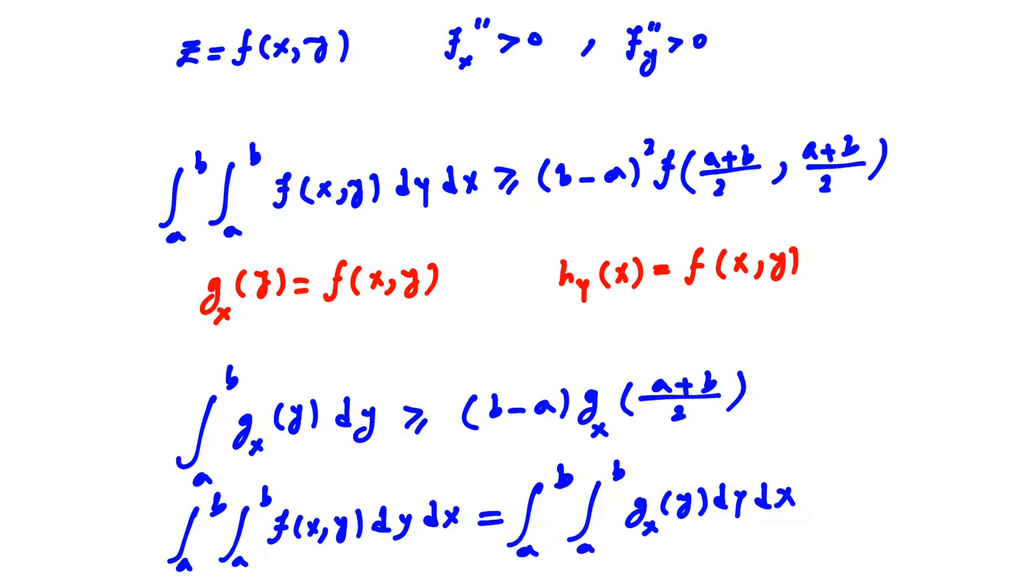Since the second derivatives of f with respect to x and y are greater than zero, if we define g(y) = f(x,y) for any specific x, and h(x) = f(x,y) for any specific y, both g and h are convex functions.